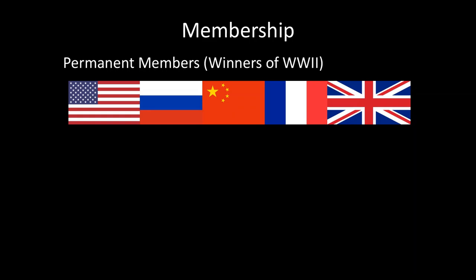They are permanent members because they were the winners of World War II — or at least in the case of Russia, the predecessor state, the Soviet Union, was a winner of World War II. If you think about how the United Nations was founded, it was created in the aftermath of World War II. So you can imagine that if you were the winner of the war and therefore capable of setting how the international agenda was going to run, you would want to put yourself in a privileged position. And that's exactly what happened with those five countries.